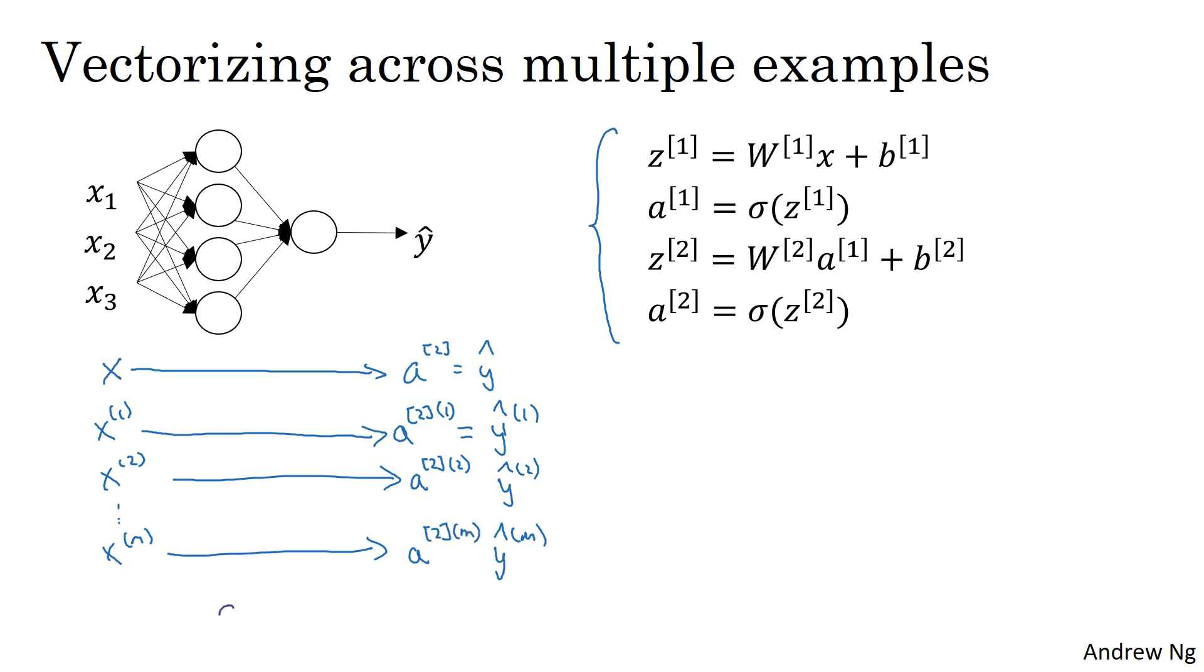The round bracket i refers to training example i, and the square bracket 2 refers to layer 2. Okay? So that's how the square bracket and the round bracket indices work.